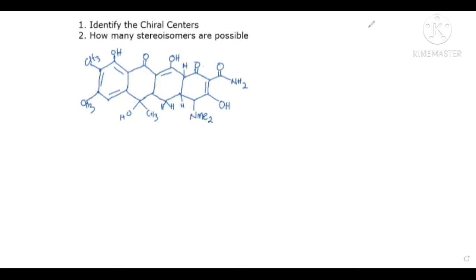In this video we're going to be solving two problems: one is to identify the chiral centers in the compound you see on the screen, and two is to determine how many stereoisomers are possible for that same compound. Before we do this, I just want to explain what chiral centers are.